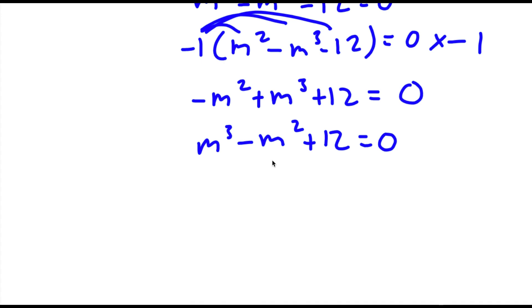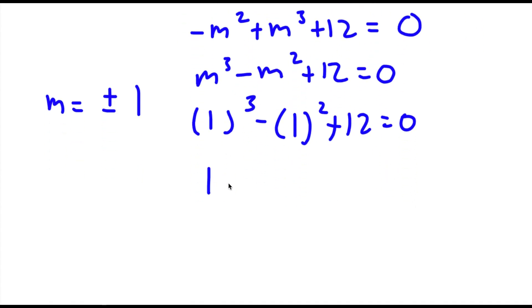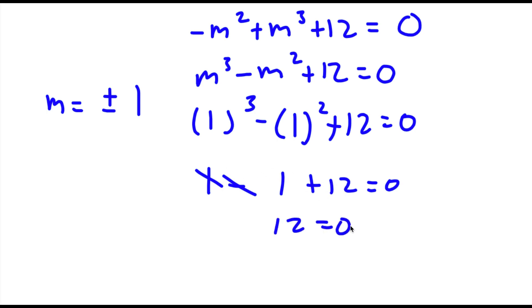Now I'm going to be trying out values of m. Let's first try out positive and negative 1. If m is positive 1, I have 1 to the power of 3 minus 1 squared plus 12 is equal to 0. That gives 1 minus 1 plus 12 equals 0, so 12 equals 0 — which is wrong. So m cannot equal positive or negative 1.